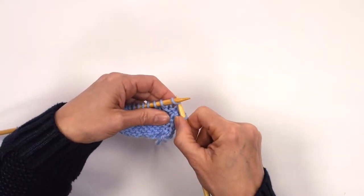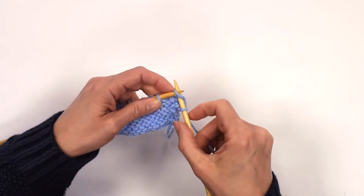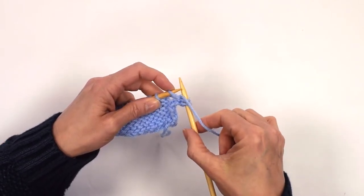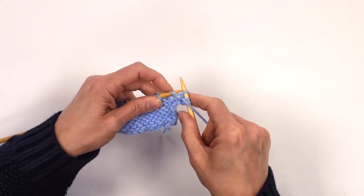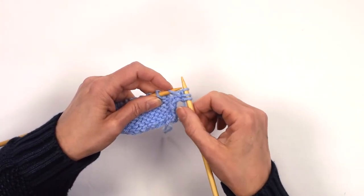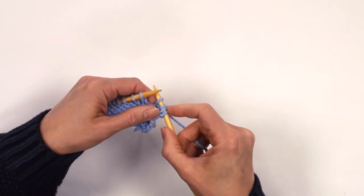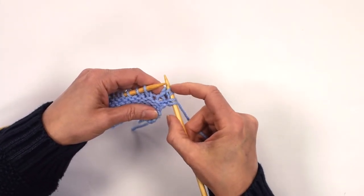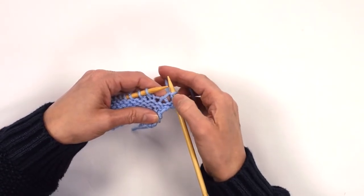Now the next stitch, you have to knit, purl, and knit all into the next stitch. So that's knit, but don't take it off here. Bring the yarn back between the needles, purl, and knit. Okay, so it does look slightly messy but not too messy. So you've got your knit-purl-knit, so that's turned one stitch there into three.